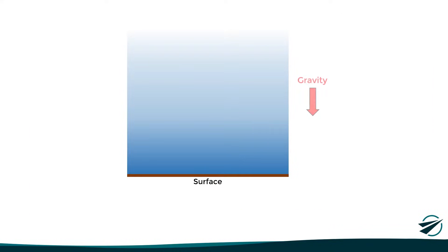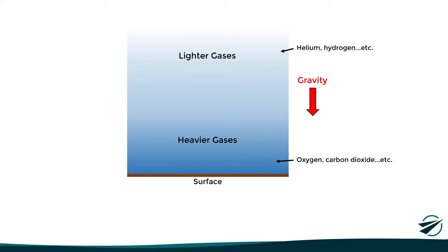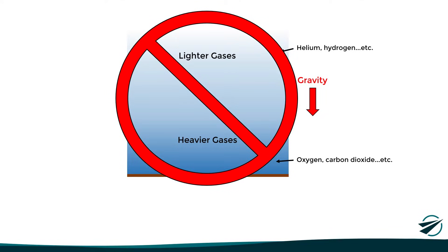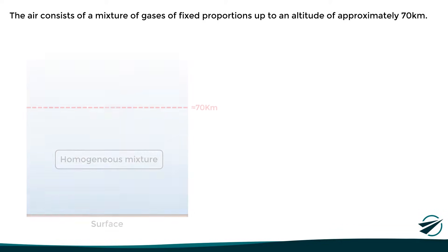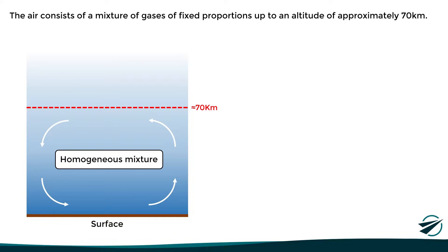We could think that due to the Earth's gravity, in the lower levels of the atmosphere we would find the heavier gases such as oxygen or carbon dioxide, while in the upper levels we would find the lighter gases such as helium or hydrogen. However, in practice this just does not happen. This is because the Earth's rotation, the friction with the surface, and the temperature variations force air to circulate and mix constantly, which is known as atmospheric circulation. This constant atmospheric circulation causes the gases to mix with each other, giving us a mixture of gases of fixed proportions from the surface up to an altitude of about 70 kilometers.